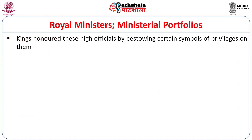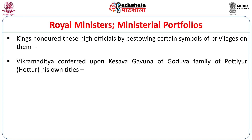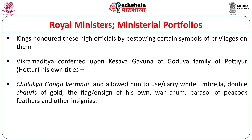Kings honored high officials by bestowing certain symbols and privileges upon them. For instance, Vikramaditya conferred upon Kesava Gavunda of the Goduva family of Pottyur (Huttur) his own title Chalukya Ganga Vermadi, and allowed Kesava Gavunda to carry a white umbrella, double chauris of gold, his own flag or ensign, war drum, parasol of peacock feathers, and other insignias. Thus the king allowed these high officials to use royal insignias, and many such honors were bestowed upon senior officials.